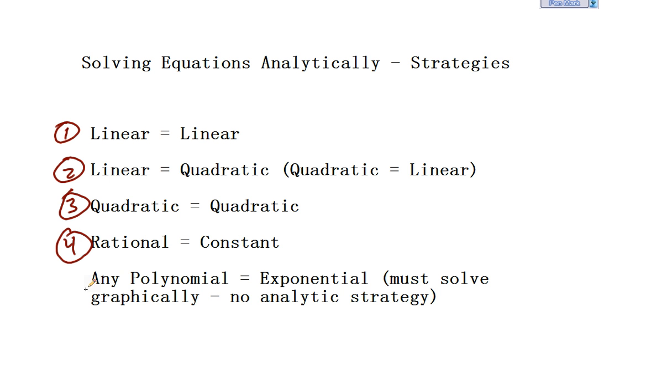Rational equals constant, yes, we can do that graphically. And number five, any time we have a polynomial, like a linear equals exponential or quadratic equals exponential, we have to solve it graphically. There is no set strategy to do that mathematically. So really, you're only limited to these polynomials, linears and quadratics.